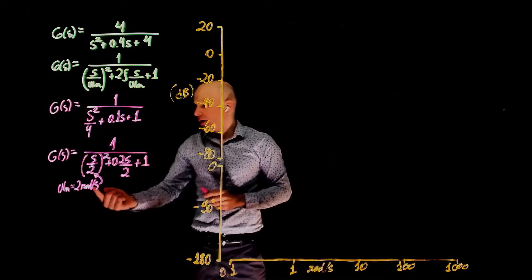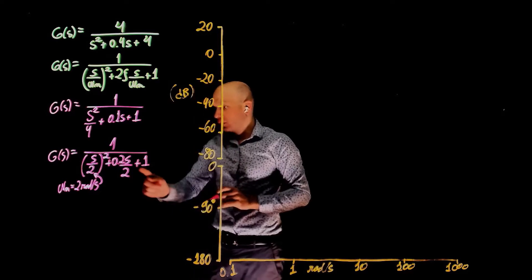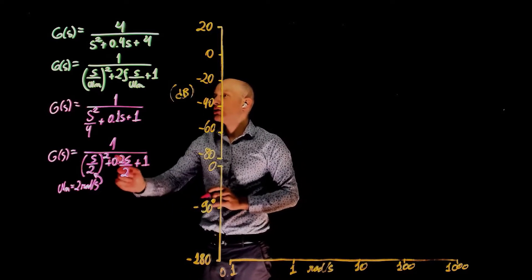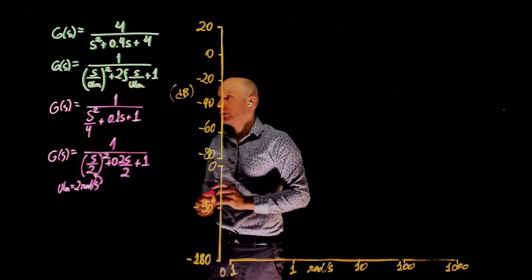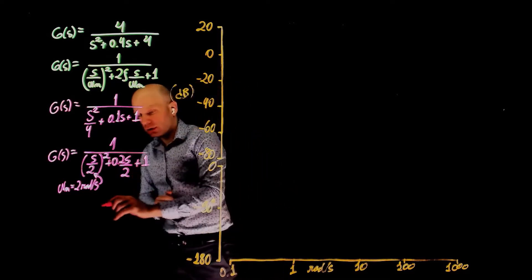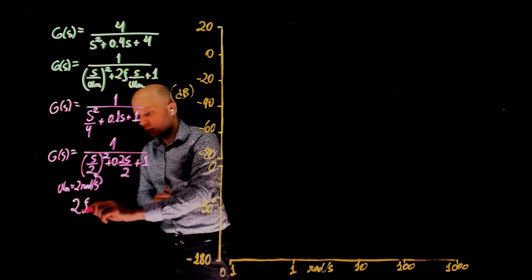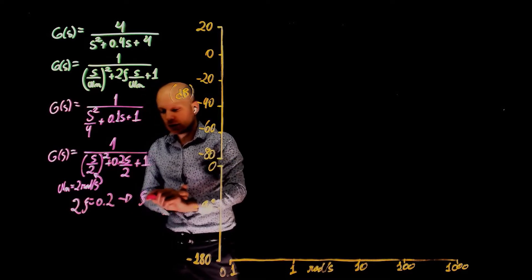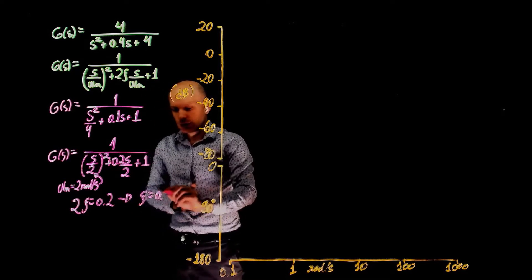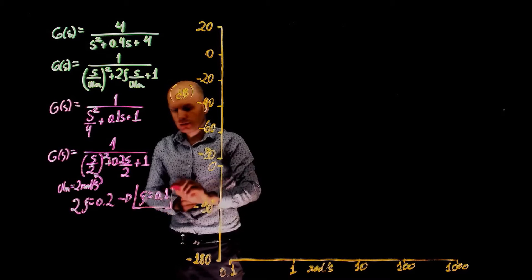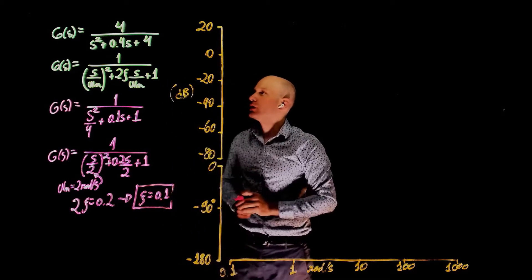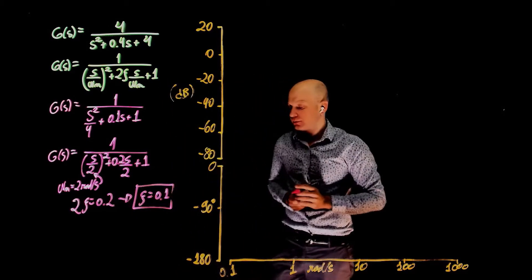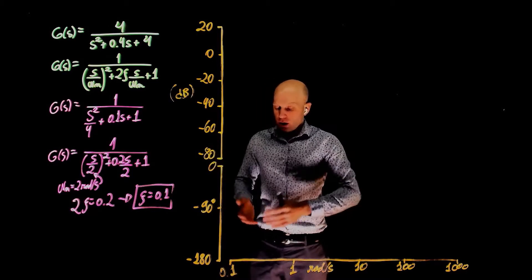So we have omega n equals to 2 radians per second and 2 zeta is what multiplies s in the numerator here. So 2 zeta equals to 0.2 gives zeta equals to 0.1. This is now important because we're dealing with complex poles.